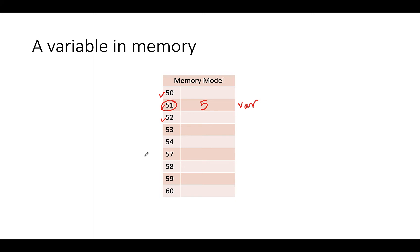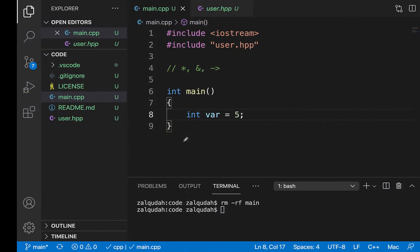When we talk about pointers, pointers are nothing but variables. That means they have names just like regular variables. They are stored somewhere in memory, so they have addresses themselves, just like other variables. And they store values, except that these values are addresses of other variables. So this is basically what a pointer is.